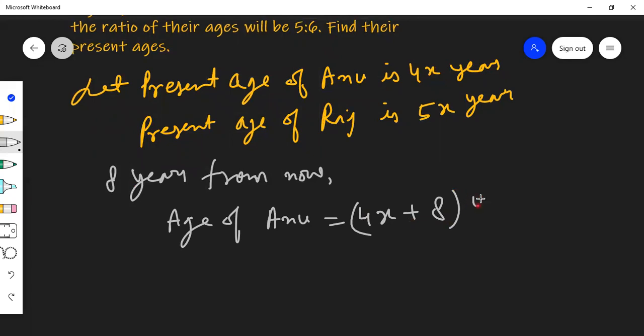And since this is years, we should write the unit. And also age of the other person is Raj. So that would also be 5x plus 8 years.